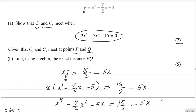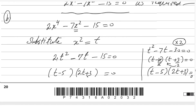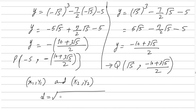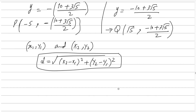We want to find the exact distance between P and Q. That is why the coordinates are kept exact rather than in decimals. The distance formula for two points (X1, Y1) and (X2, Y2) is: distance equals the square root of (X2 minus X1)² plus (Y2 minus Y1)². This is the formula to memorize.